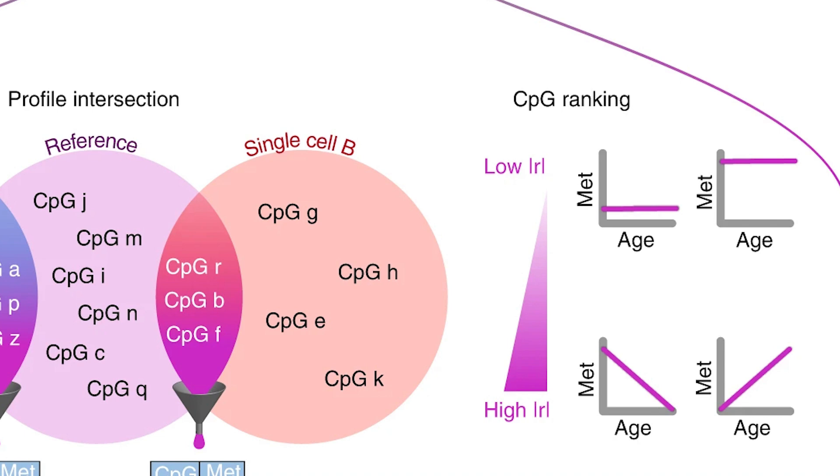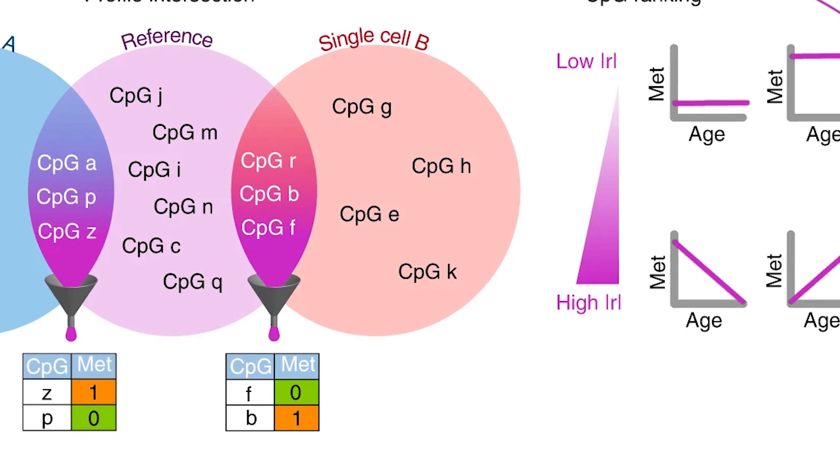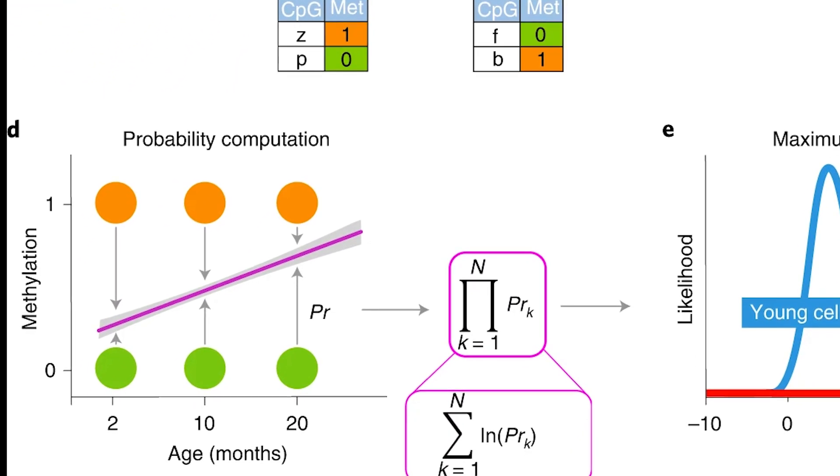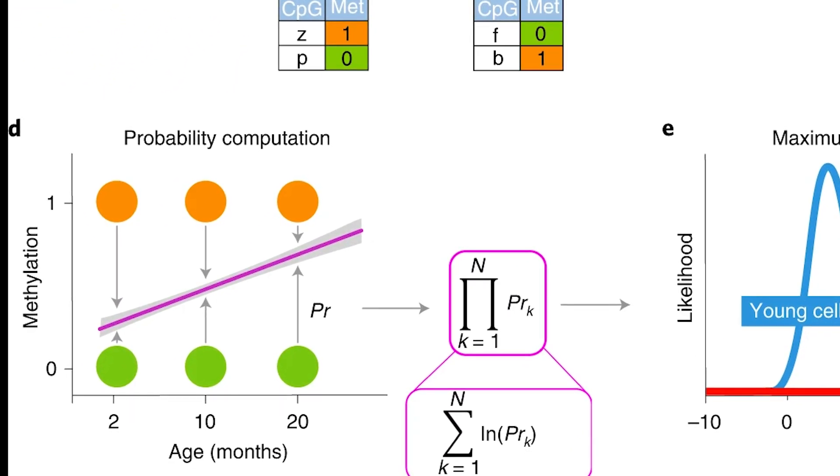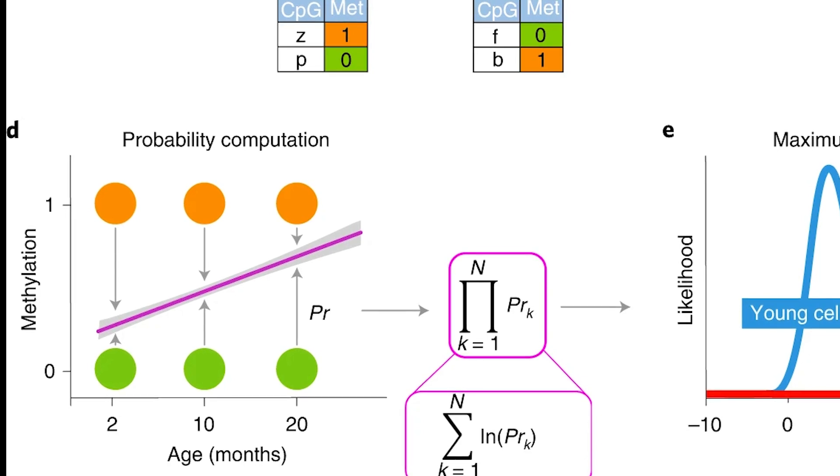So combining that with the first point you can estimate the probability of observing a methylated state at each of these more important CpG sites for each age and then compare that with what values you actually measure for a single cell that you analyze.